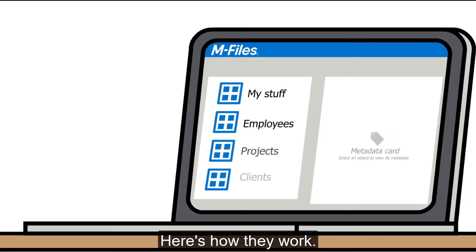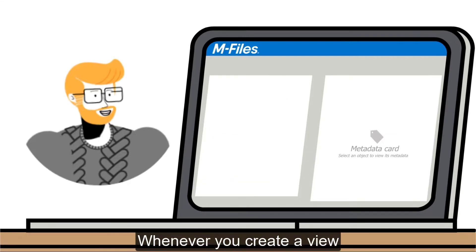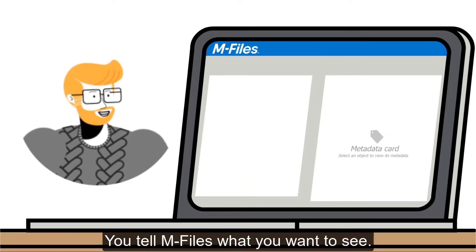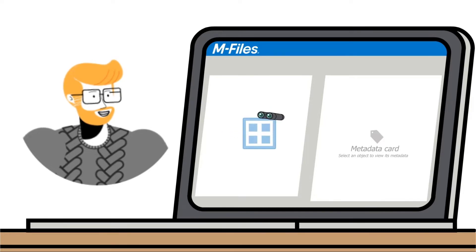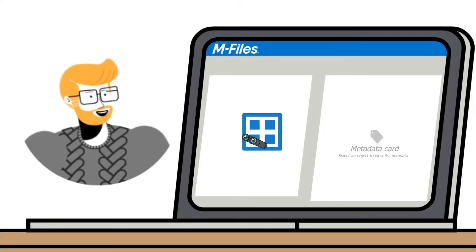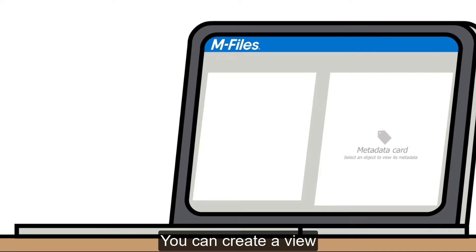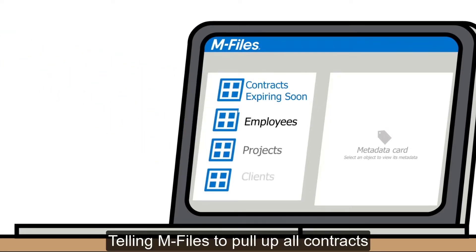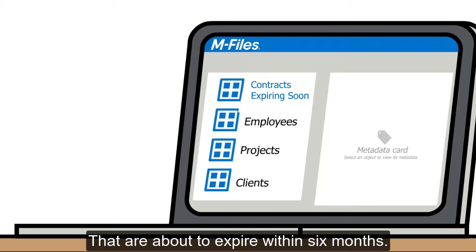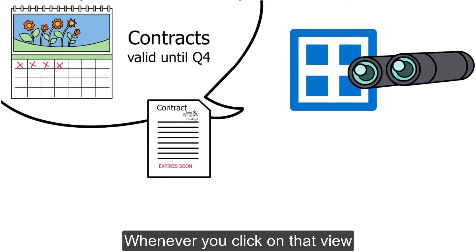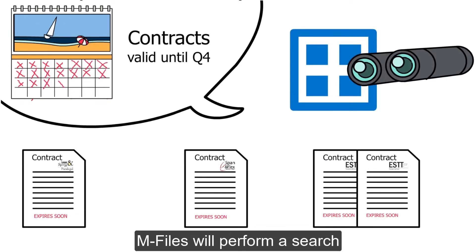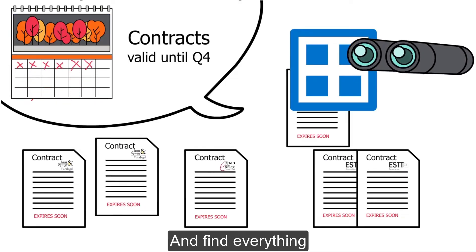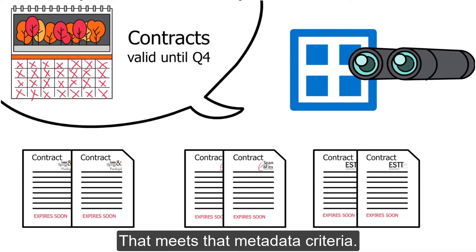Here's how they work. Whenever you create a view, you tell mFalls what you want to see. For example, you can create a view telling mFalls to pull up all contracts that are about to expire within 6 months. Whenever you click on that view, mFalls will perform a search and find everything that meets that metadata criteria.